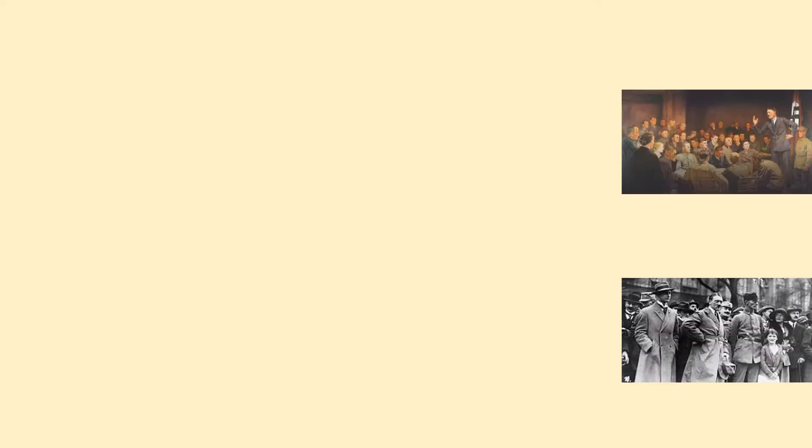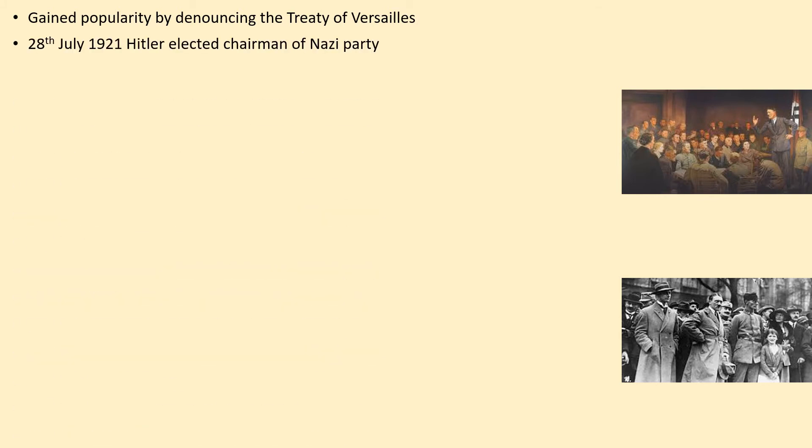The main events are as follows. Hitler gained popularity by denouncing the Treaty of Versailles, which massively increased party membership. On the 28th of July 1921, Hitler was elected chairman of the Nazi party. You may remember from last lesson a man called Drexler, who effectively created the Nazi party — he gets kicked out and Hitler replaces him.